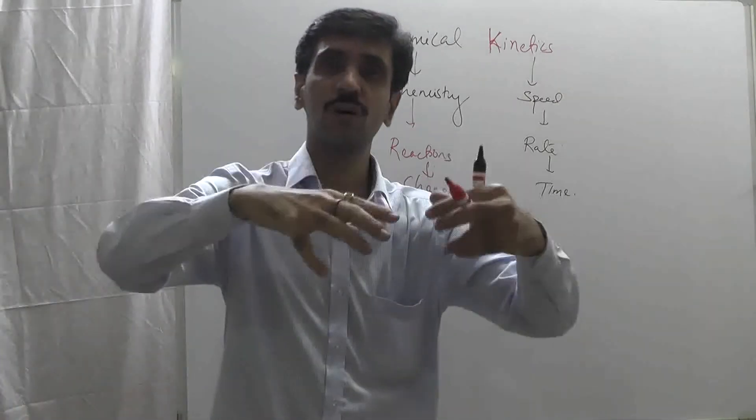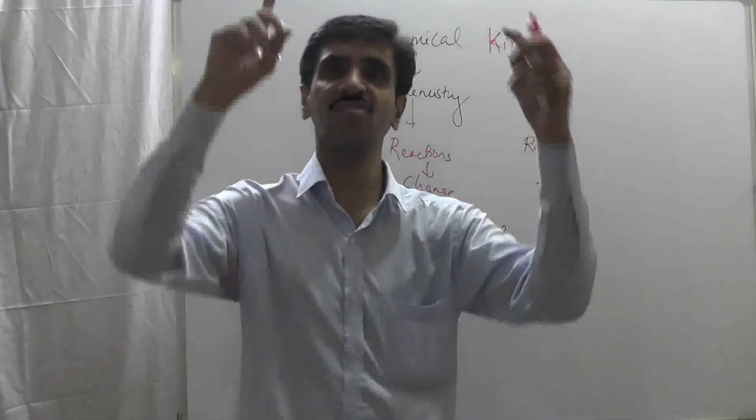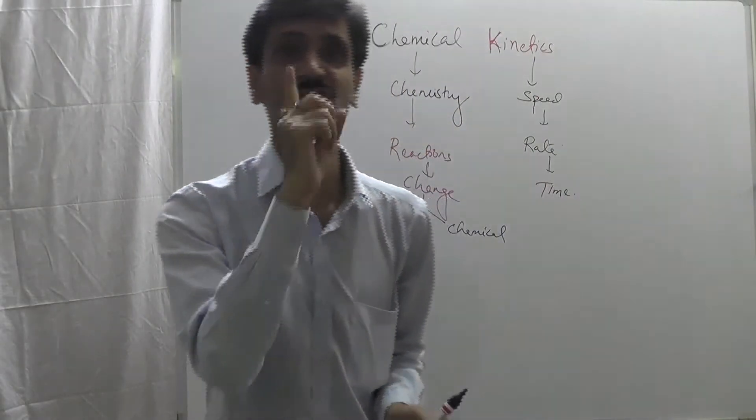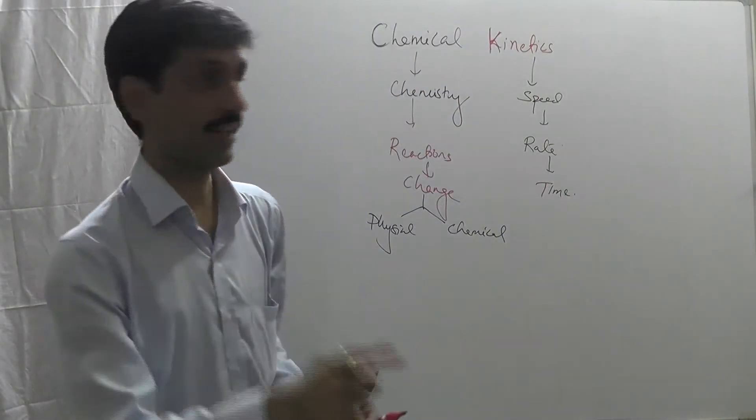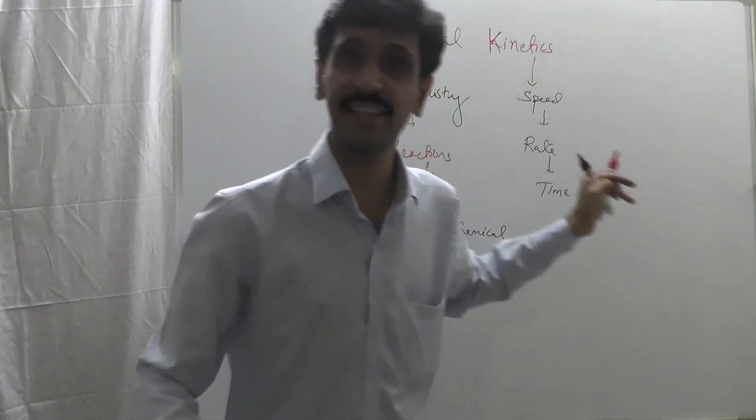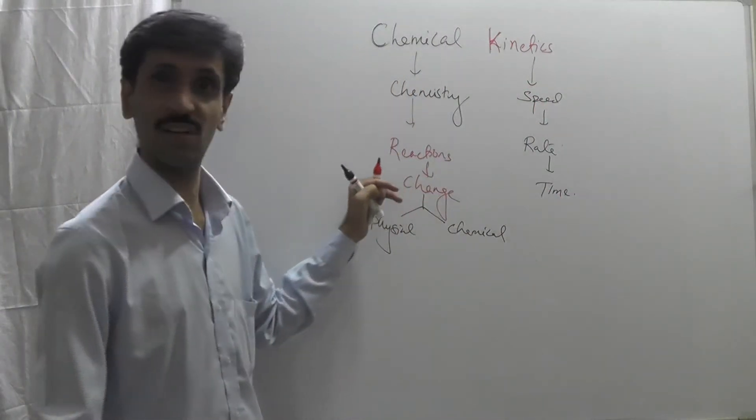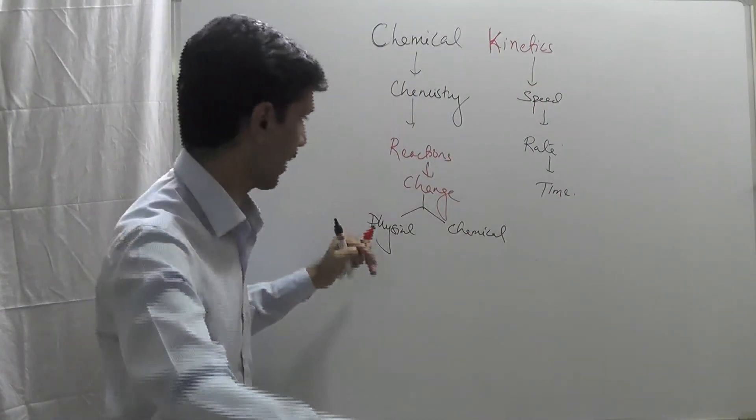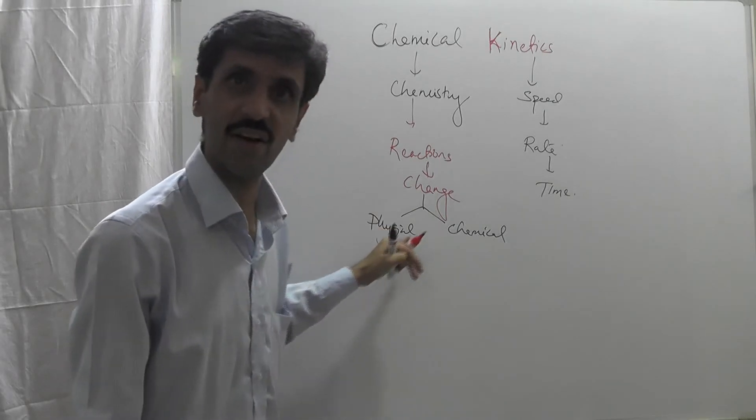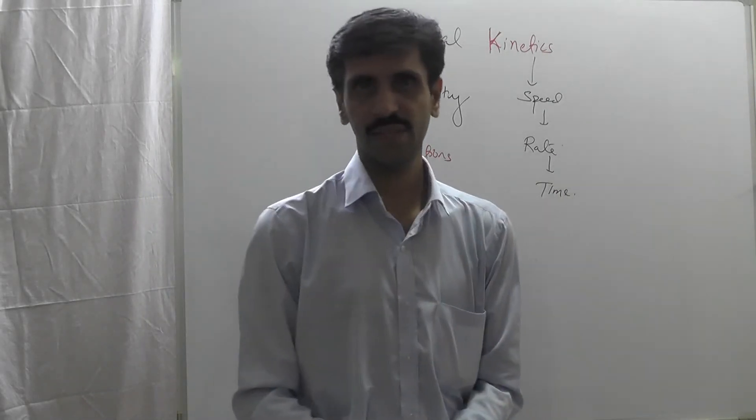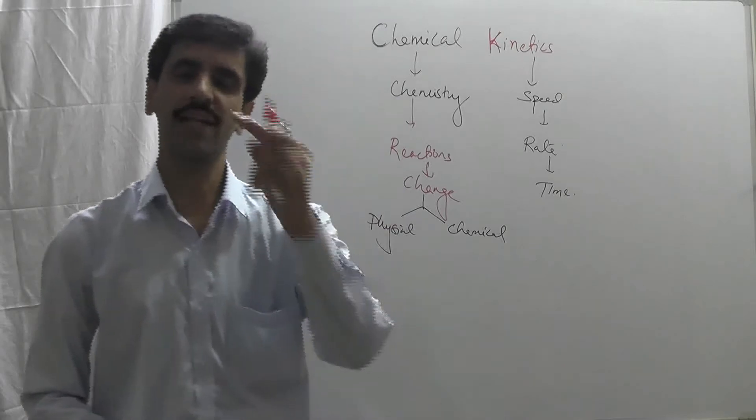When you join both these words, we come to a conclusion: chemical kinetics is nothing but a branch of chemistry which deals with the speed or the rate of a reaction. That reaction can be either a physical reaction or a chemical reaction.